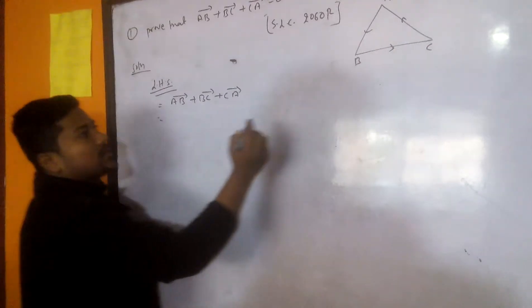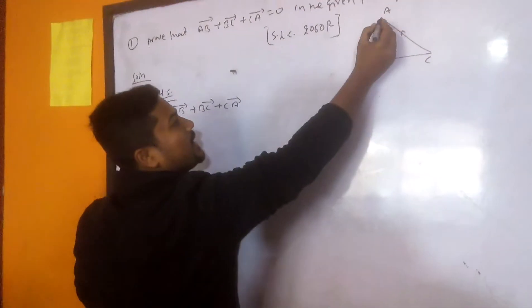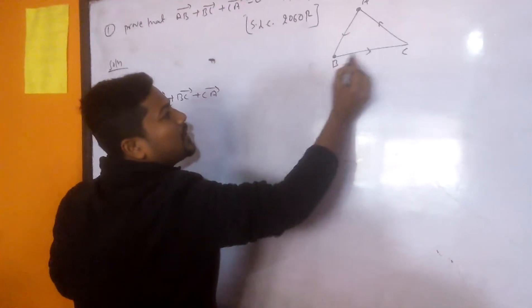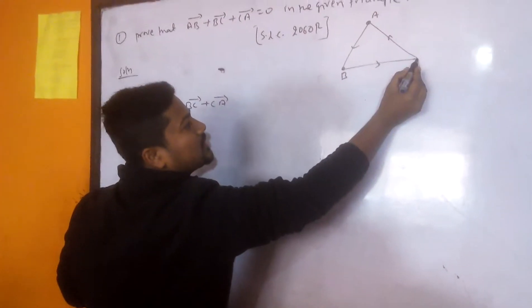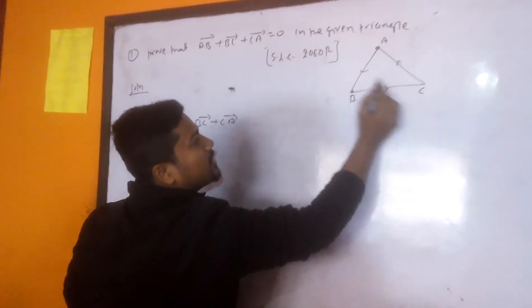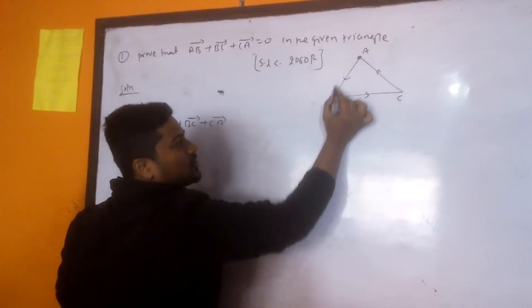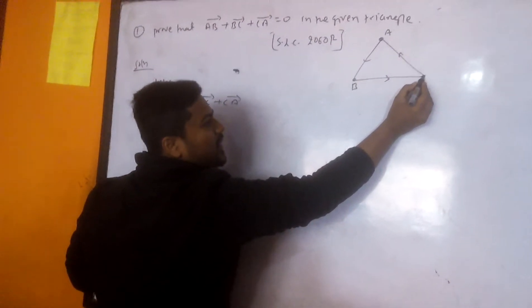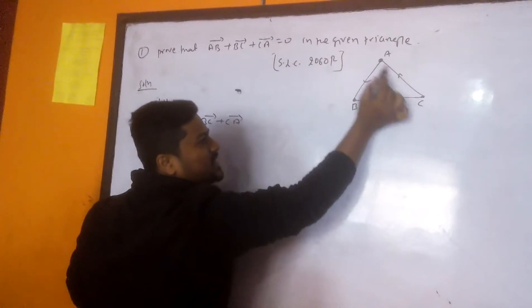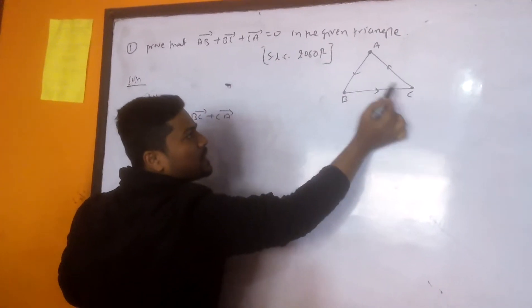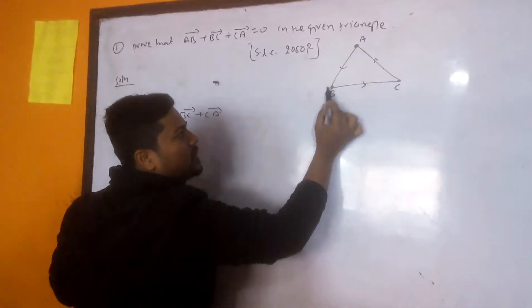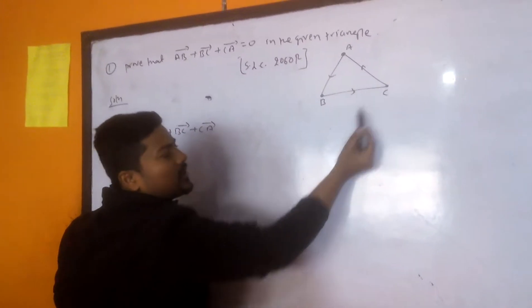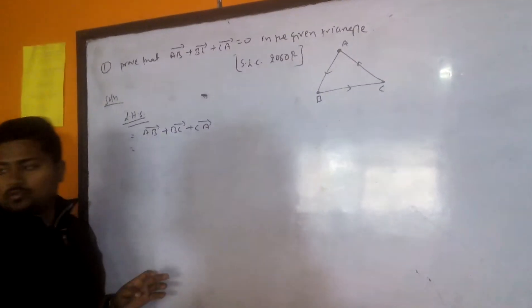AB vector plus BC vector: from A you start the journey and you reach C. AB vector plus BC vector means AC vector. So AB vector plus BC vector equals AC vector. This is the triangle law of vector addition.